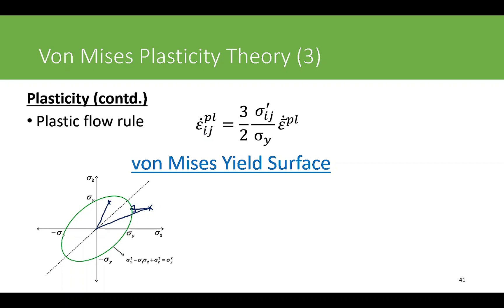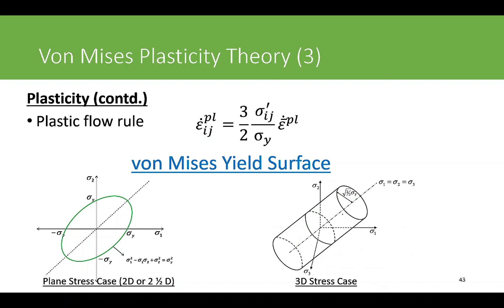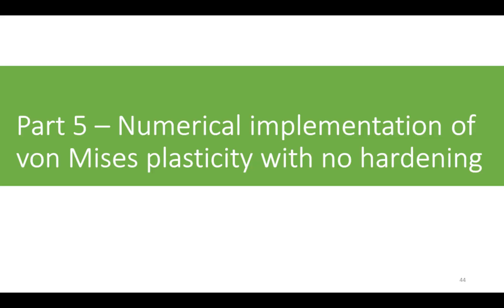Moving from 2D to 3D stress space, the ellipse changes into a cylinder. Anything inside this cylinder is elastic and anything outside is plastic. You have to update the plastic strain tensors along with the elastic and total strain tensors. The normality rule still applies: if your trial stress goes outside, you always return normal to the yield surface. I will explain in more detail how this is implemented in the numerical code when we implement it.